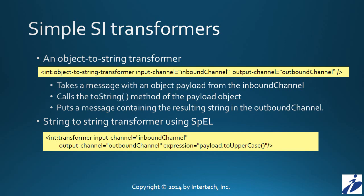Here we see some examples of Spring Integration transformers using some built-in components. At the top of the slide, we see the use of a built-in object to string transformer. In this particular case, presumably in the inbound channel we have messages with object payloads. The Spring Integration transformer will take the message off of that inbound channel, call toString on the object in the payload, creating a string, which it then places in a new message and puts that new message in the outbound channel.